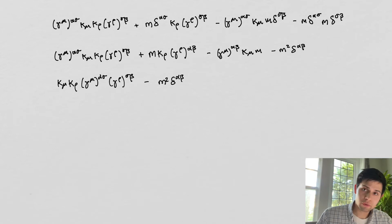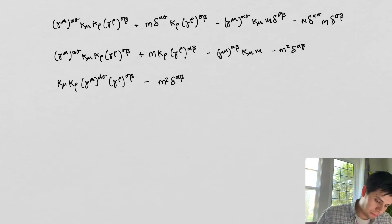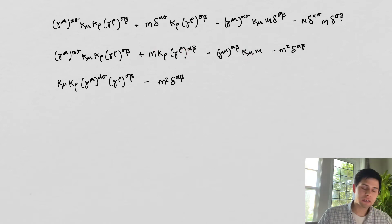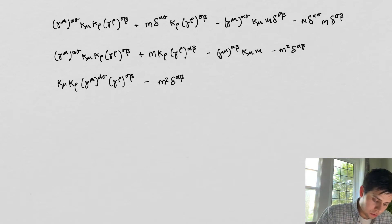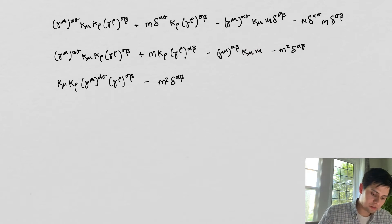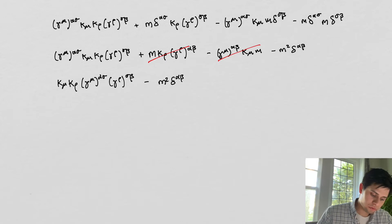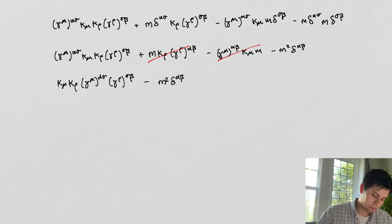The reason for doing that rearrangement is that we can see these terms are the same — just different indices. We're summing over the same thing for both of them, since rho-rho are the same and mu-mu are the same. So we can get rid of those repeated terms, and we're left with a simpler expression, which is getting even shorter — good news for us.